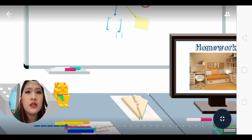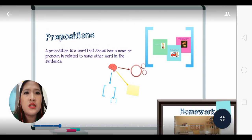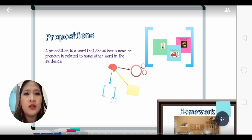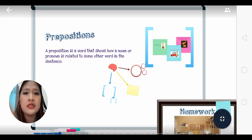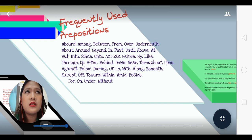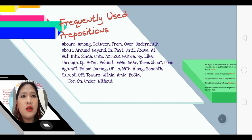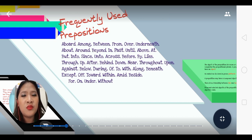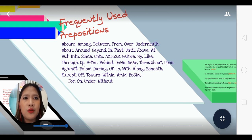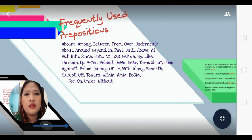A preposition is a word that shows how a noun or a pronoun is related to other words in the sentence. It presents the relationship and the location of the word, and it connects the word to the rest of the sentence. It makes the sentence sound smoother — not only by sound, of course, but also by meaning.